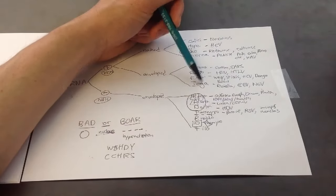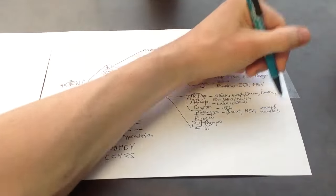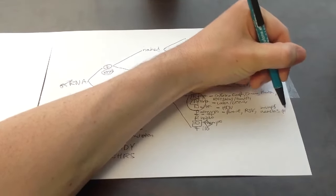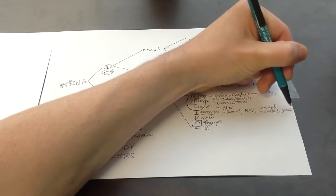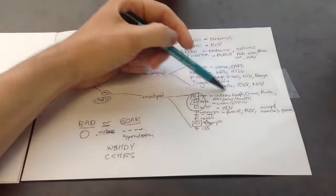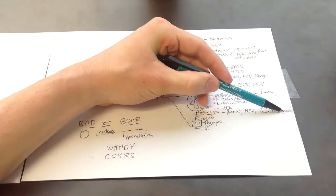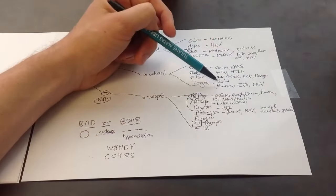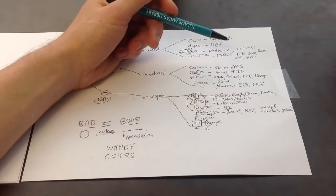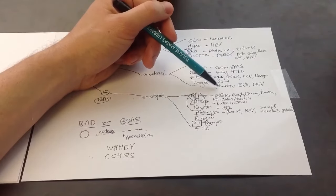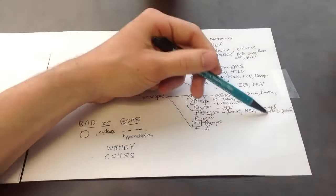And one other note. Measles is rubeola virus. Rubeola, not rubella. You will get that confused because rubella, as you know, causes German measles. This is measles. Rubeola is measles. Remember that. Rubella. Germans are really hot. So you have German measles with rubella. Measles is rubeola.